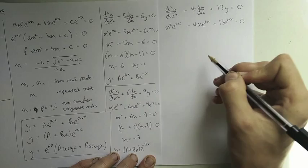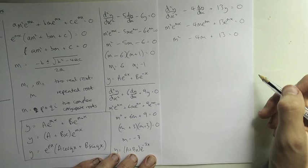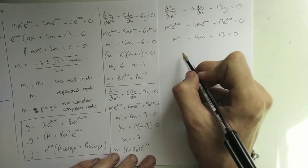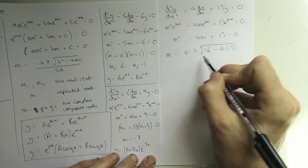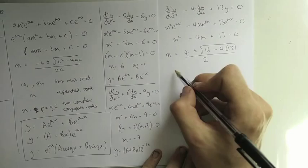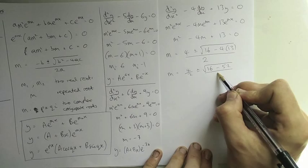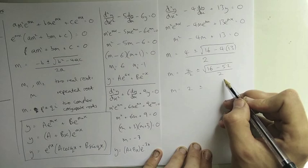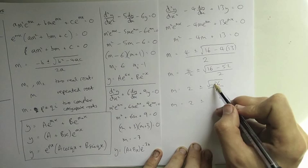We need to solve m² − 4m + 13 = 0. We can't factorize this easily, so we use the quadratic formula: m = (4 ± √(16 − 4 × 1 × 13)) / 2. That gives 4 ± √(16 − 52) all over 2, which is 4 ± √(−36) over 2. The square root of −36 gives 6i, so m = 4/2 ± 6i/2, which is 2 ± 3i.